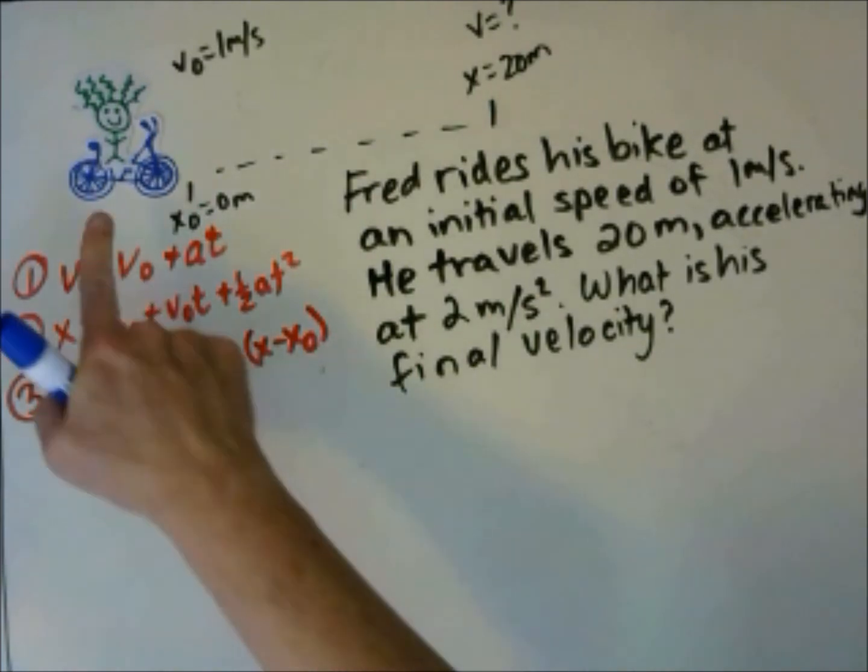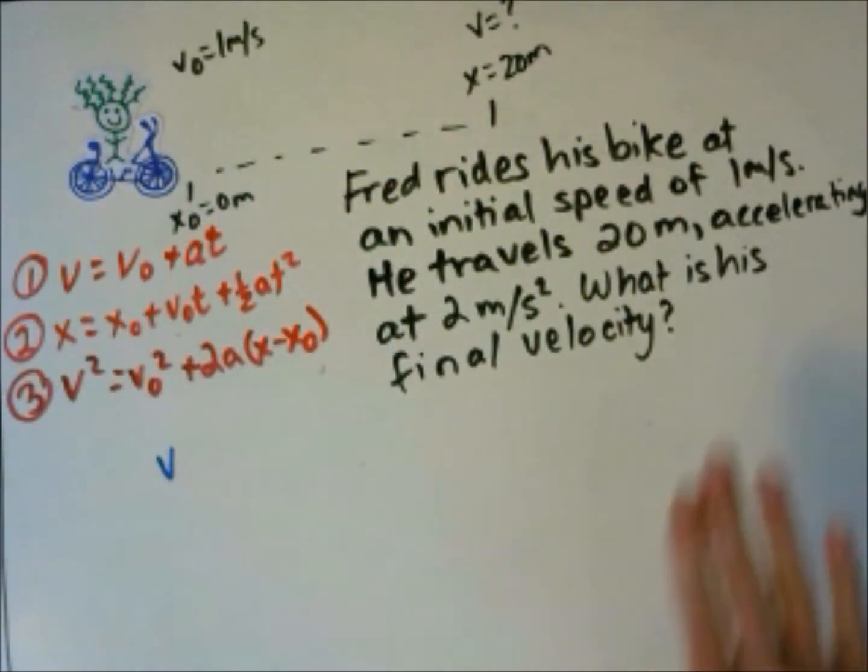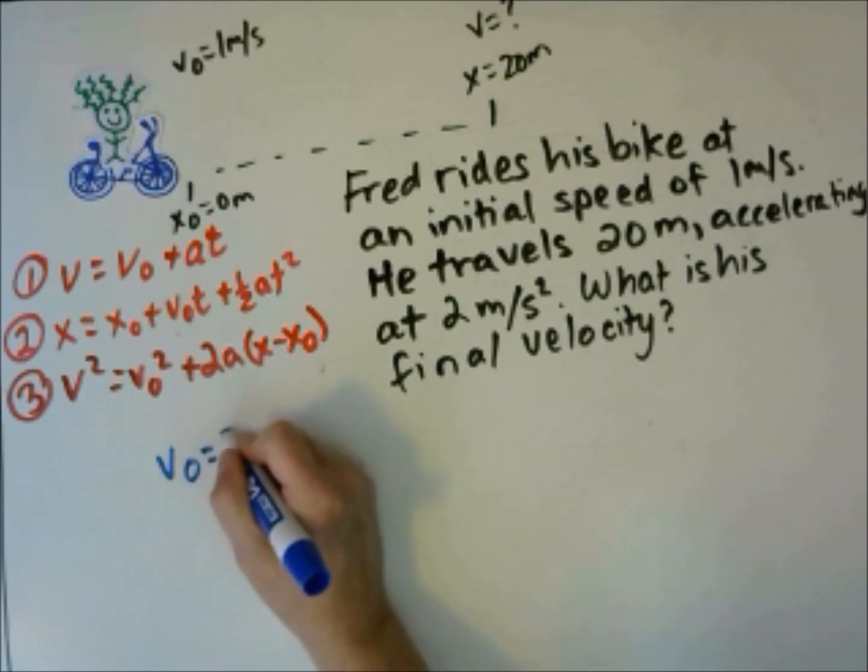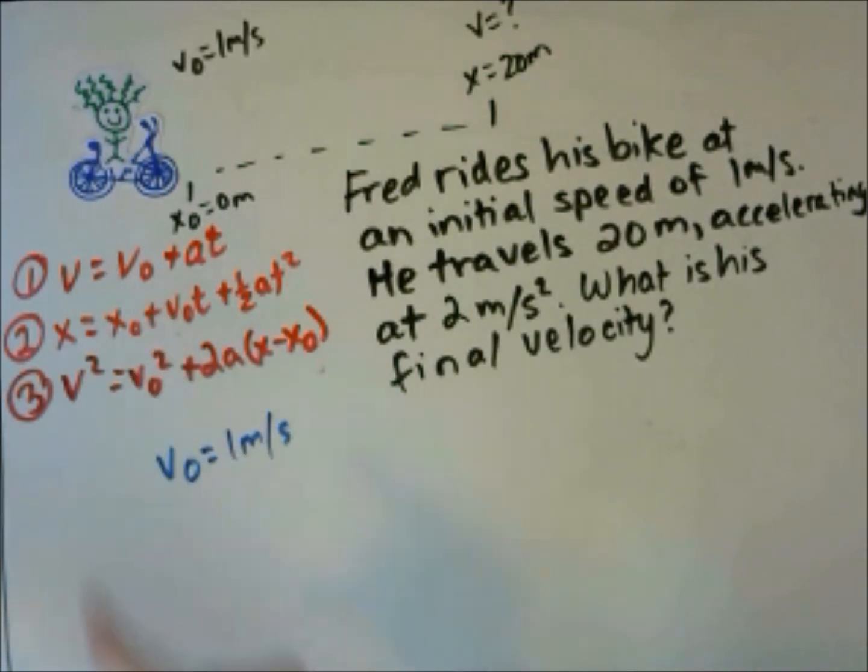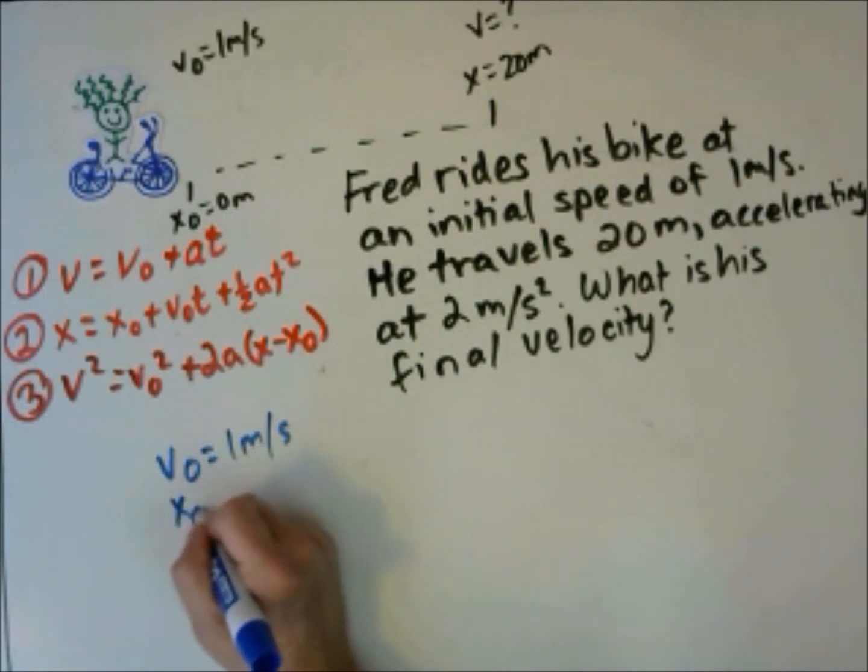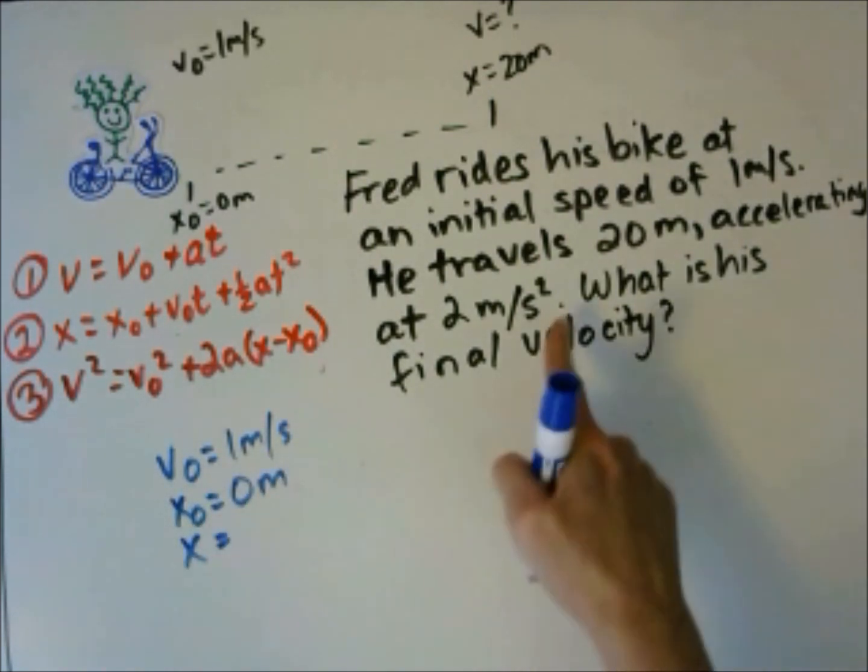We're going to write out what we know to decide which equation to use. His initial velocity, I drew a picture this time. We're going to start drawing pictures to show the motion and what's going on as we start. So we start at 1 meter per second. He said he travels 20 meters. We can assume since we weren't told otherwise his initial position is at 0, and his final position must be at 20 meters.